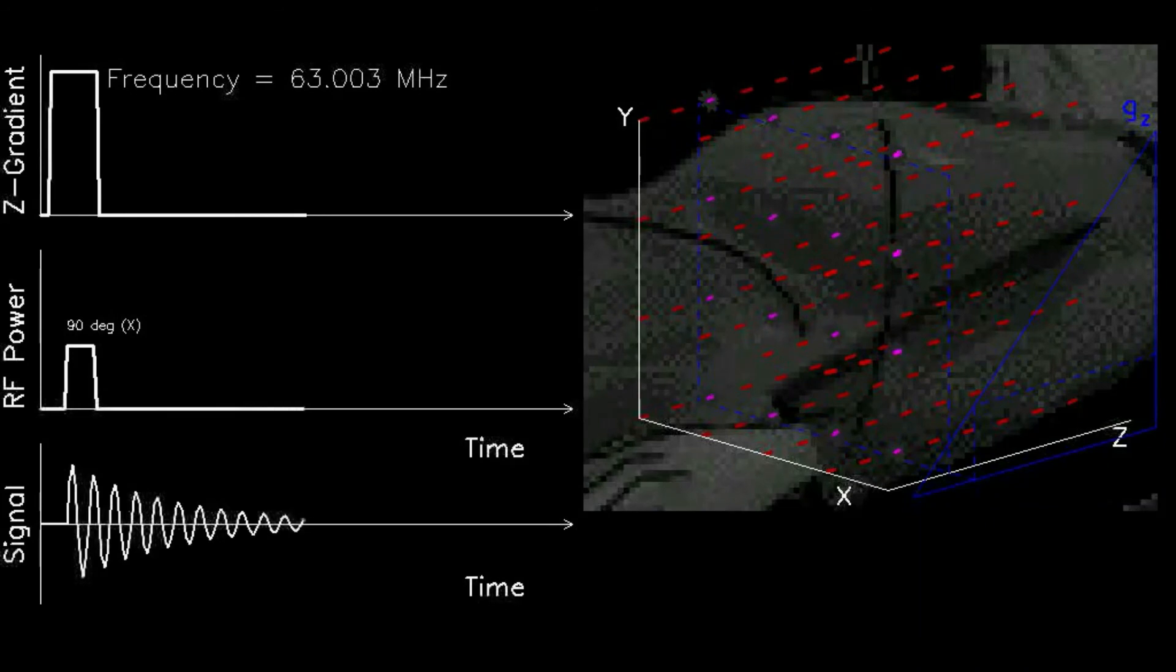By systematically varying the resonant condition, the entire volume can be subselected, one slab at a time. The resonant condition is indicated by the vertical and horizontal lines on the graph.